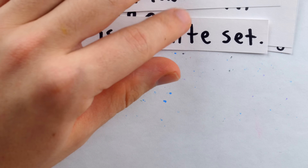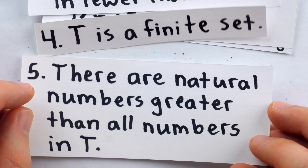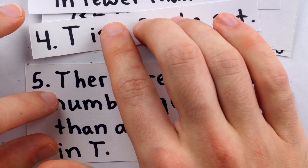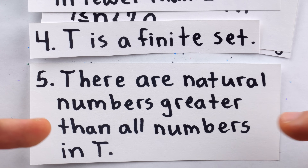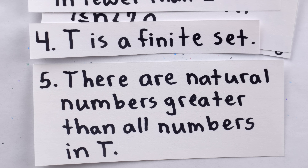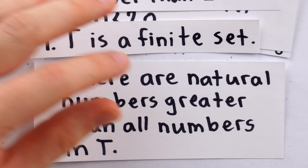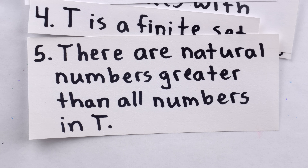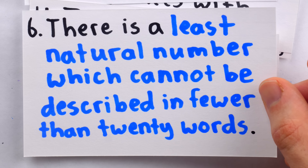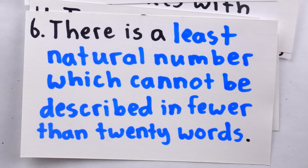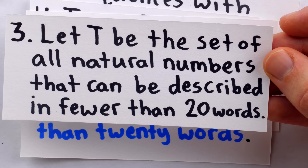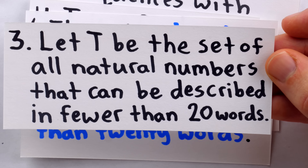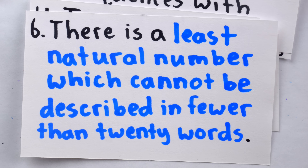Since T is a finite set of natural numbers, it is certainly the case that there are natural numbers greater than all numbers in T. T is a finite set, so whatever the biggest number in T is, all numbers bigger than that would satisfy this description. But then, if there are natural numbers greater than all numbers in T, certainly there is a least such number, which by definition of T would be a least natural number which cannot be described in fewer than 20 words.